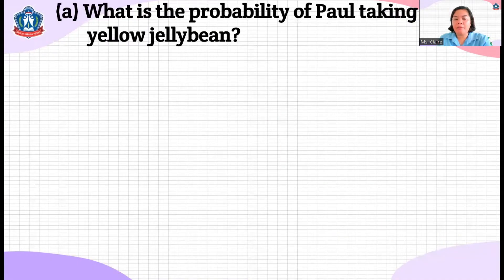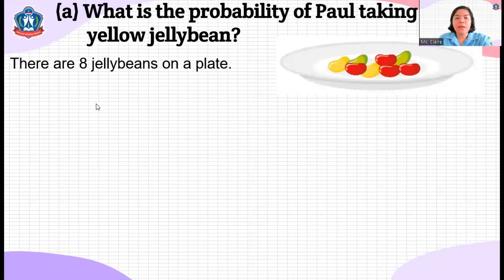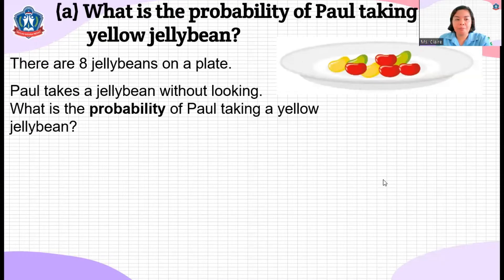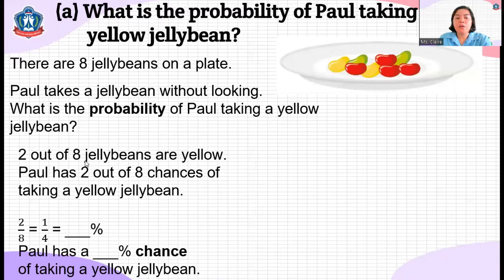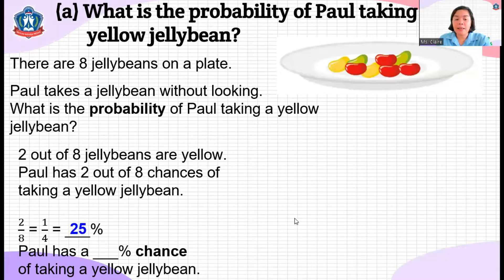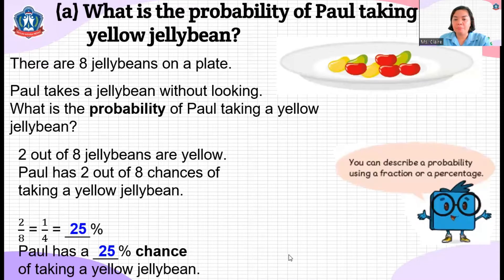Here is another problem. What is the probability or the chance of Paul taking a yellow jelly bean? There are eight jelly beans on a plate. Paul takes a jelly bean without looking. Two out of eight jelly beans are yellow, so Paul has two out of eight chances of taking a yellow jelly bean. Two out of eight equals one quarter, or 25%. So Paul has a 25% or one-quarter chance of taking a yellow jelly bean.